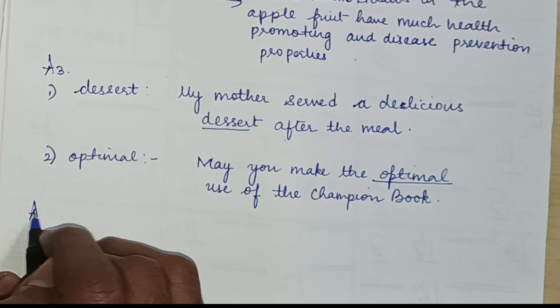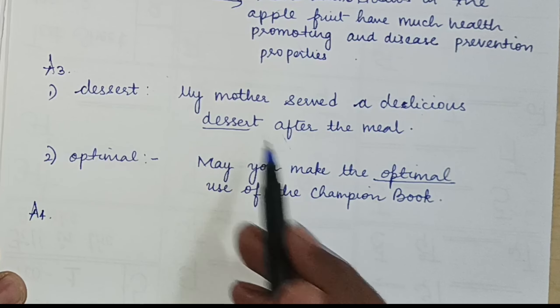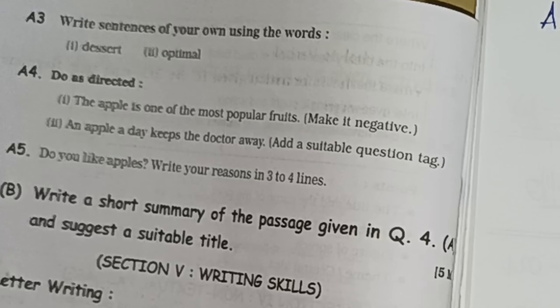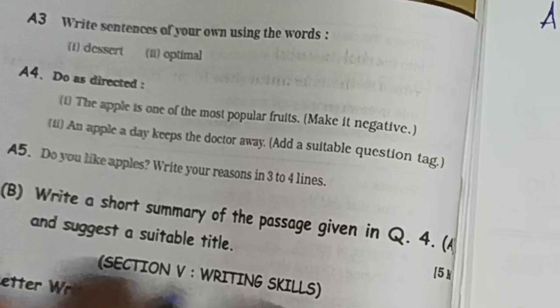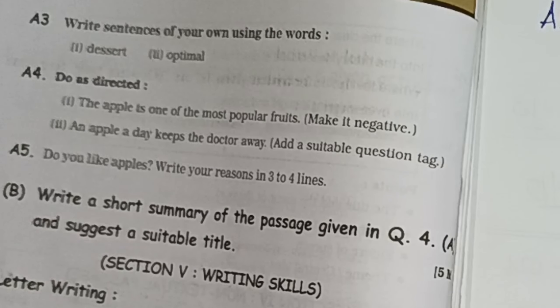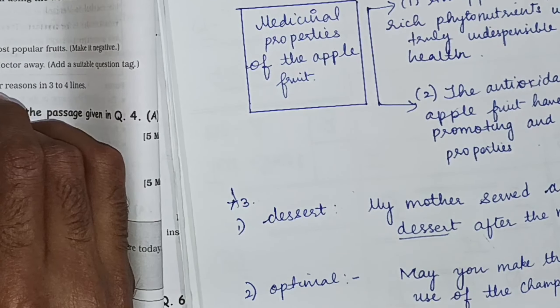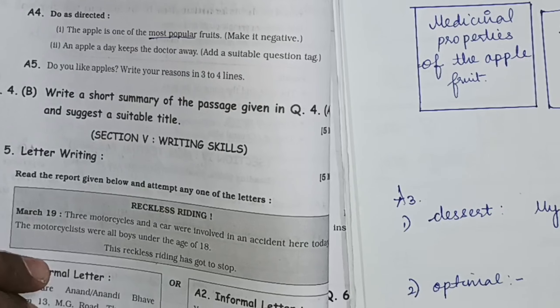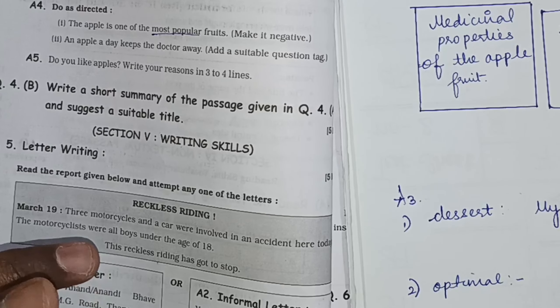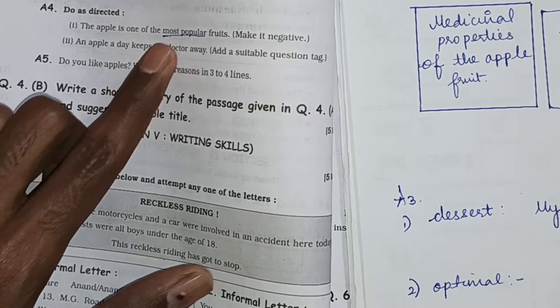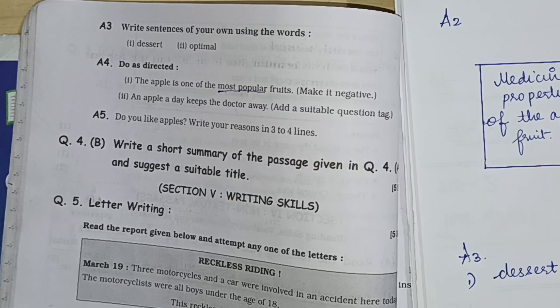For A4, 'do as directed': The apple is one of the most popular fruits — make it negative. The key is to find the opposite of 'most' without changing the meaning. The opposite of 'most' is 'least', so the negative form is: 'The apple is not one of the least popular fruits.'